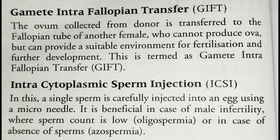The fourth technique is Intra-Cytoplasmic Sperm Injection, or ICSI. In this process, a single sperm cell is removed from the male body and injected directly into an egg using a micro-needle. After this, the egg is fertilized and the process continues. This technique is used when sperm count or sperm production is significantly reduced in the male, addressing male infertility.